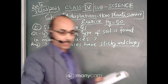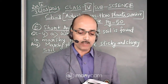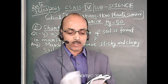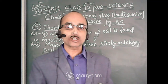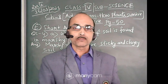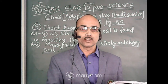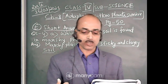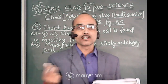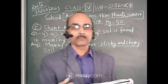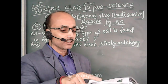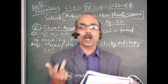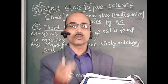Now question number B, which I will discuss with you verbally: What values do we learn from plants that adapt to their environment? You know what adaptation is. Adaptation means the process of developing certain special features in the body to adjust to the surroundings. These plants develop certain features. For example, mangrove plants have breathing roots that grow out of the soil to breathe, because the soil is very sticky and clayey.